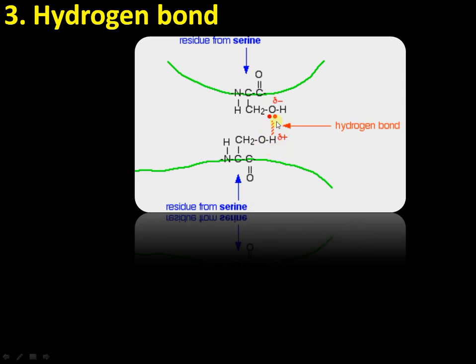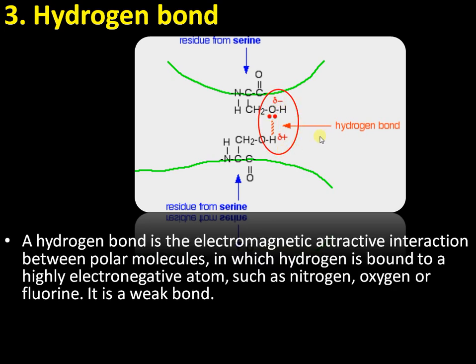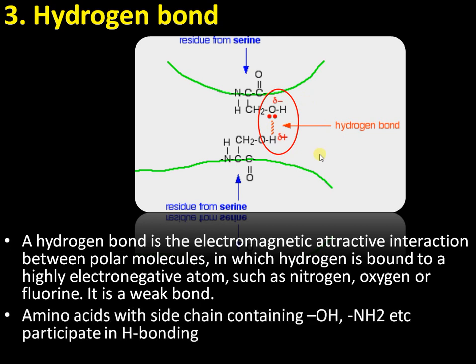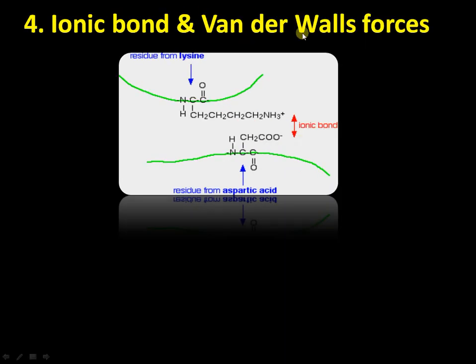Now moving to the third type of bond — the hydrogen bond. The hydrogen bond is a bond between a hydrogen atom and an electronegative atom like oxygen or nitrogen. In the case of amino acids, for example serine has a side chain of –OH; another serine in a different chain also has –OH. The hydrogen will bind to the electronegative oxygen, forming a hydrogen bond. Amino acids with side chains –NH or –OH are often involved in hydrogen bond formation.